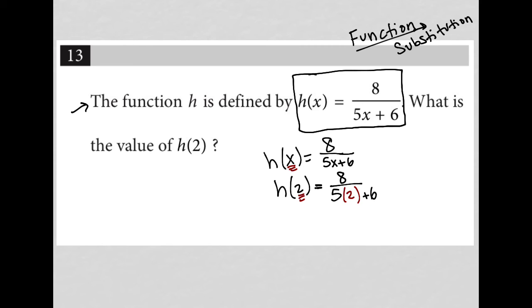And all that's left here is to simplify. So our numerator is still 8. 5 times 2 is 10, so we'd have 10 plus 6. So this turns into 8 over 16. And 8 divided by 16 reduced is 1 half. So our answer to this question is 1 half.